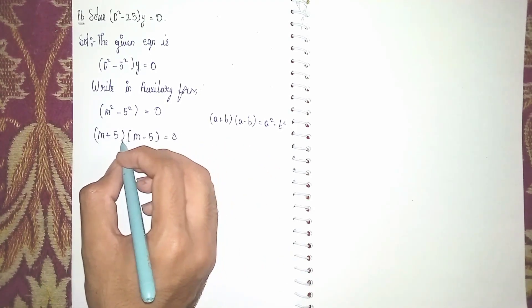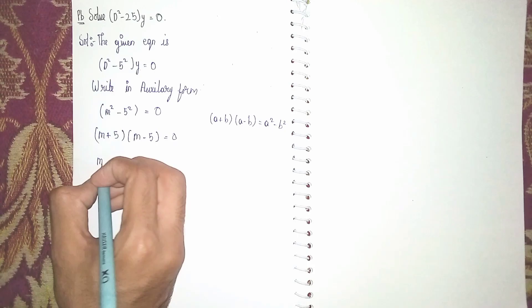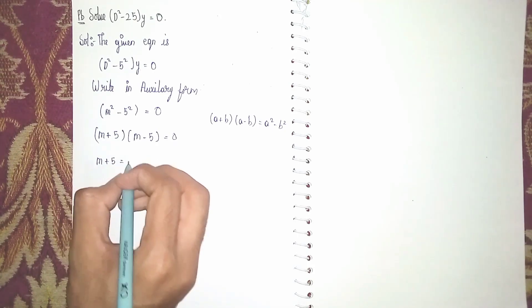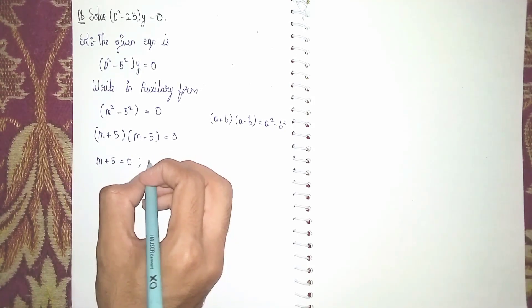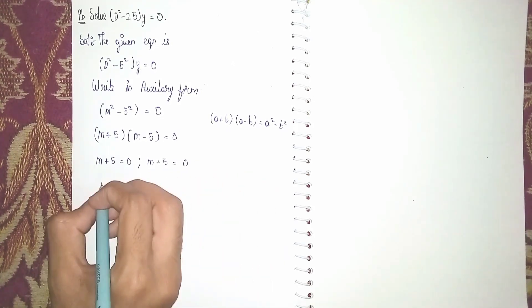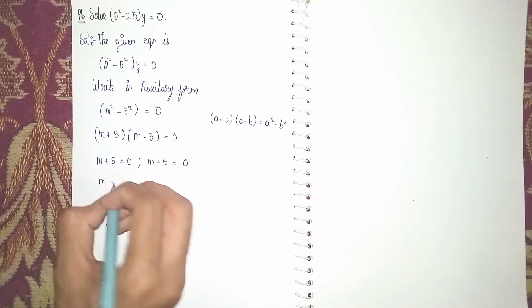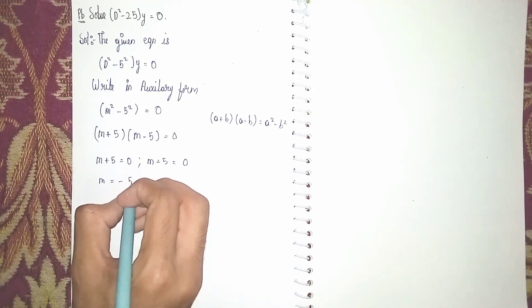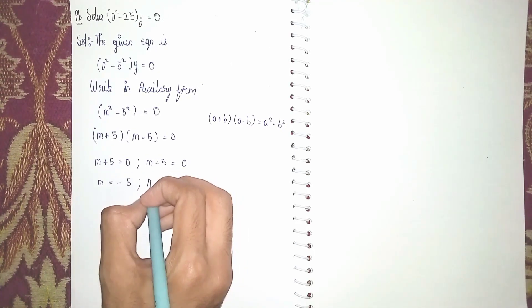Now separately equate with 0. It becomes m plus 5 is equal to 0 and m minus 5 is equal to 0. So m is equal to minus 5 and m is equal to 5.